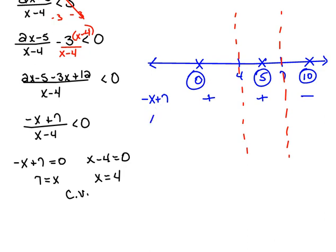Now, what about the factor of x minus 4? If I used a 0, that would be a negative number. If we used a 5, it would be a positive number. And if we used a 10, it would be a positive number.